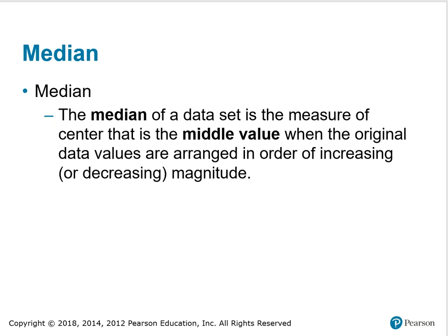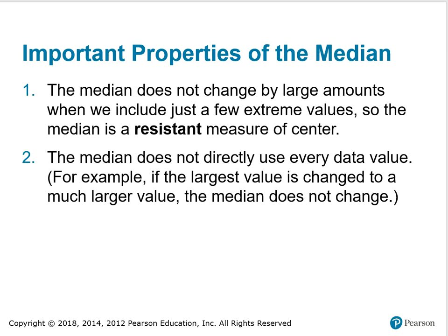The next measure of center is median. The median of a data set is the measure of center that is the middle value when the original data values are arranged in order of increasing magnitude. Some important properties of the median: The median does not change by large amounts when we include just a few extreme values, so the median is a resistant measure of center. The median does not directly use every data value. For example, if the largest value is changed to a much larger value, the median does not change.